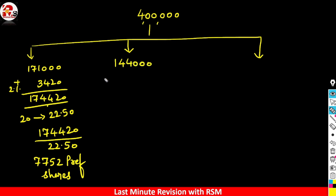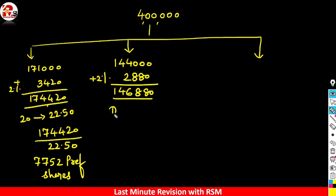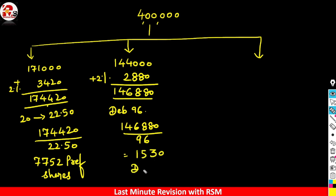For option 2, we have 1,44,000. Adding 2% premium to this: 2% of 1,44,000 is 2,880. So 1,44,000 plus 2,880 equals 1,46,880. Option 2 was debentures at 96. So we divide 1,46,880 by 96, and the answer is 1,530 debentures. Note that in this second option there is a 4 rupee discount.